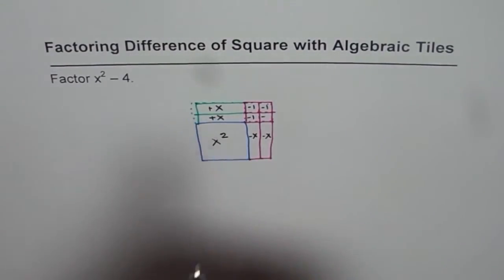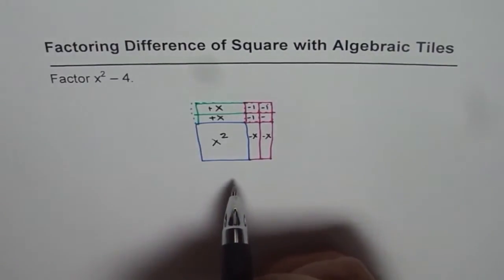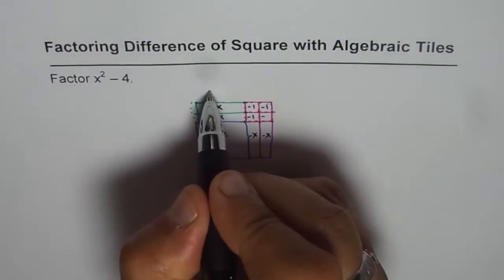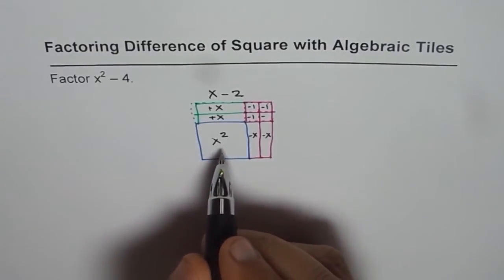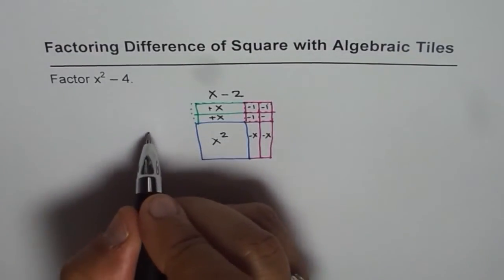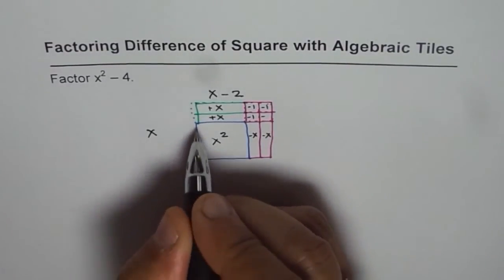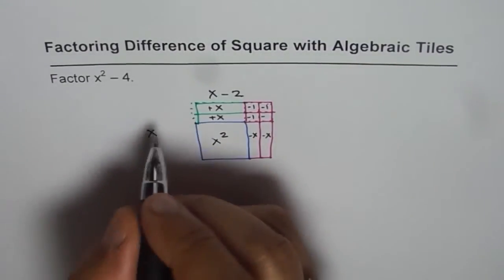Now, length and width are the dimensions of this rectangle, which are x minus 2, and here we have x, that is x units, and x plus 1 plus 1, x plus 2.